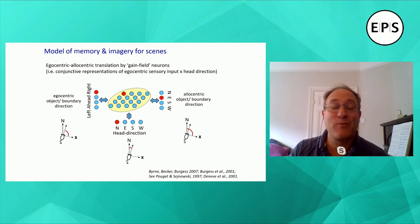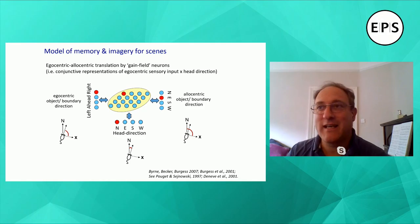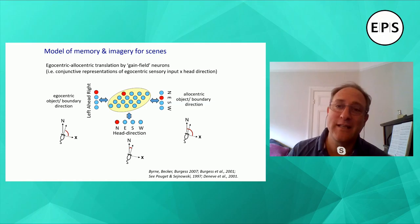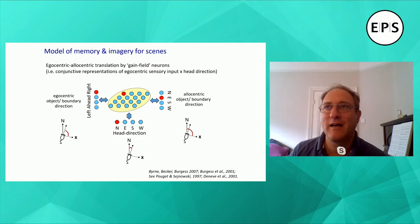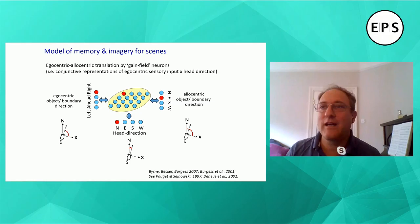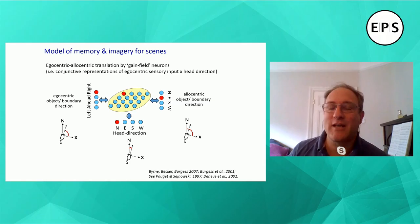If we wanted to make a model of spatial memory and imagery, we would need to translate between egocentric sensory inputs and outputs like imagery and actions — which are also egocentric — and the allocentric representations in the hippocampal formation. To do this, we need to make use of our head direction. If there's a stimulus to your right and you're facing north, then that stimulus will be to your east.